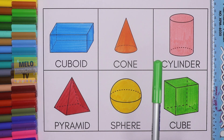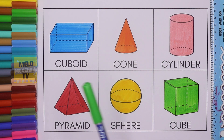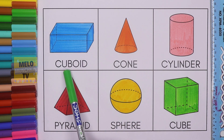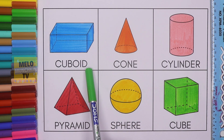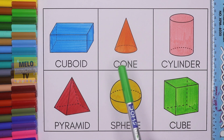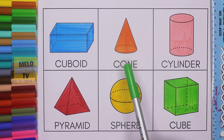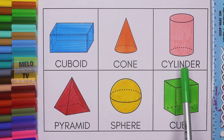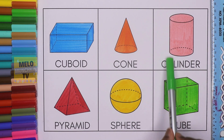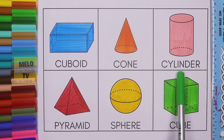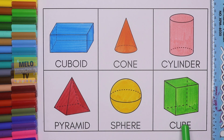Let's repeat once again. This is cuboid — C-U-B-O-I-D. This is cone — C-O-N-E. This is cylinder. This is pyramid. This is sphere. And this one is cube.